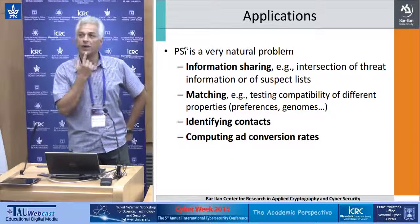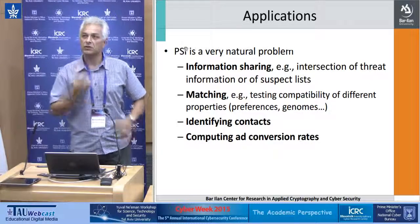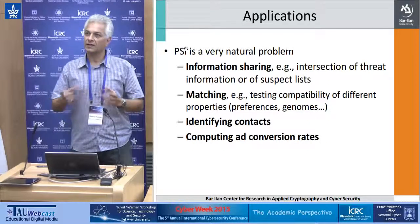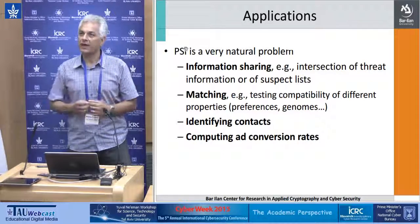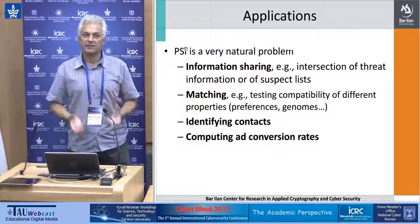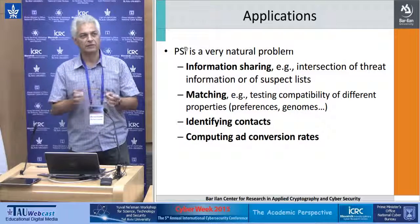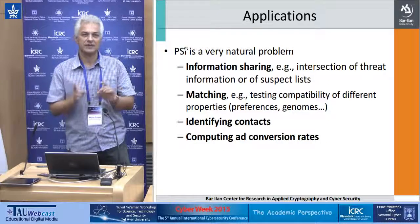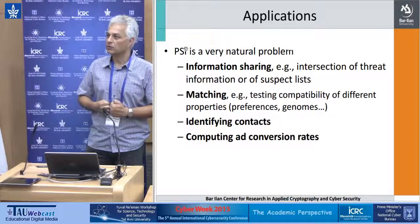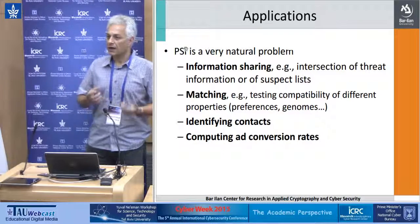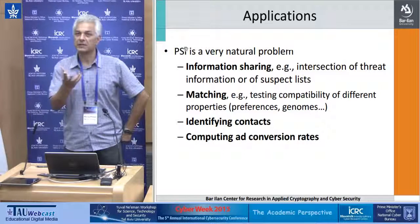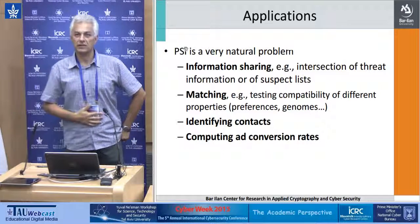Another application is for matching. They have a set of properties and want to see if they match. A simple example is dating — each person has a set of properties, and they match if the intersection of the sets is larger than some threshold. All kinds of genomics applications are also relevant.